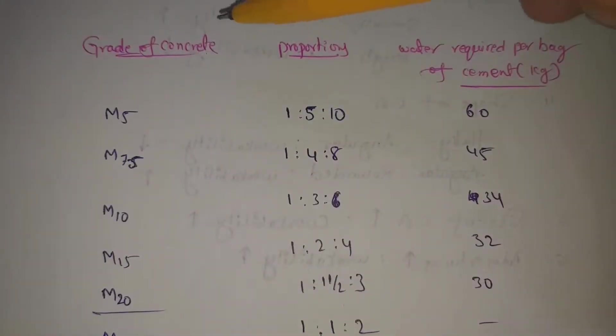Next topic: grade of concrete. Concrete means it is the mixing of cement, fine aggregate, coarse aggregate and water. So, if we mix with suitable proportions, we will form concrete.